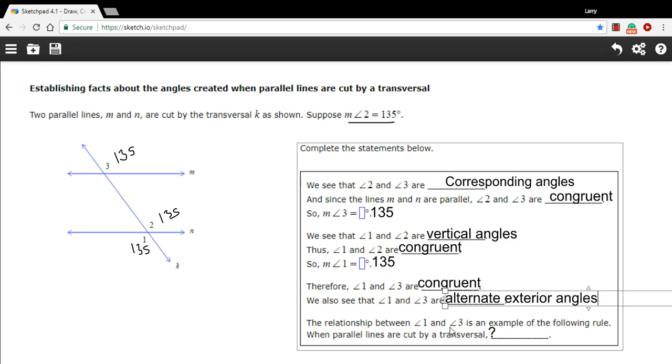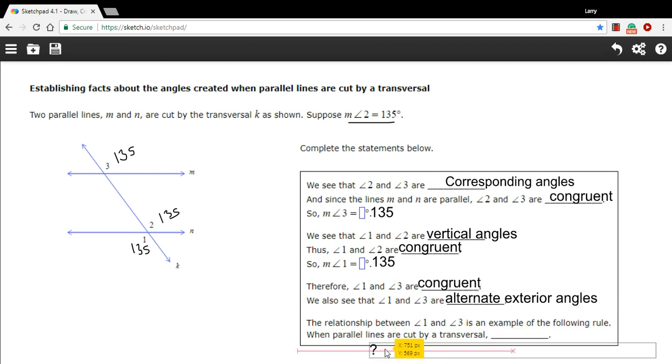And then it says, the relationship between 1 and 3 is an example of the following rule when parallel lines are cut by a transversal. And the rule, I'm going to move this down here because it's a little bit long, is that alternate exterior angles are congruent.